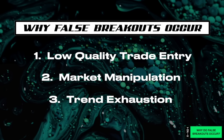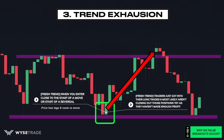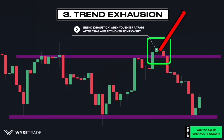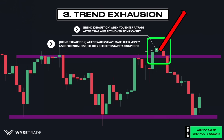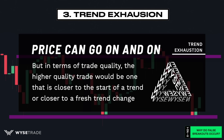And third, trend exhaustion. When you get into a trade close to the start of a move, this is known as a fresh trend, where price has legs and room to move, because traders just got in and haven't made their money yet. Fresh trends are higher quality trade entries because you can capture a larger portion of the move. In contrast, if you get into a trade after price has already moved significantly, price might suffer from trend exhaustion - when traders have made their money, see potential risks, and start taking profit. If enough people take profit, the trend will reverse. Trend exhaustion doesn't mean the trend will reverse 100%, but the higher quality trade entry would be closer to the start of a fresh trend change.